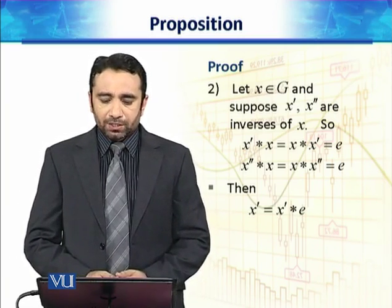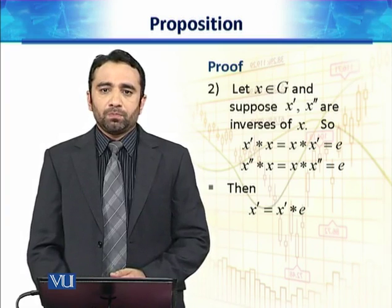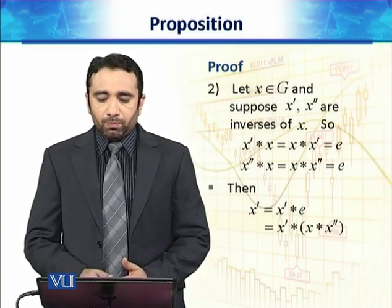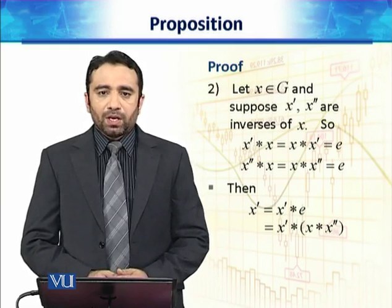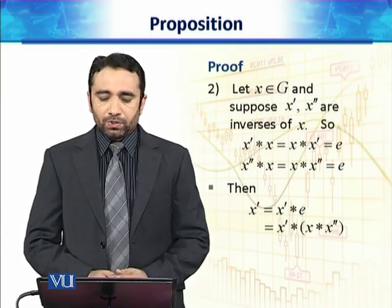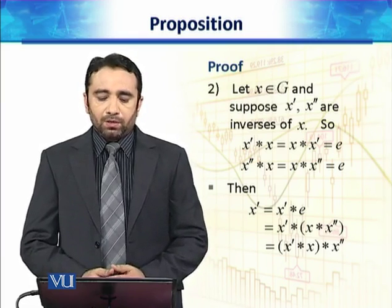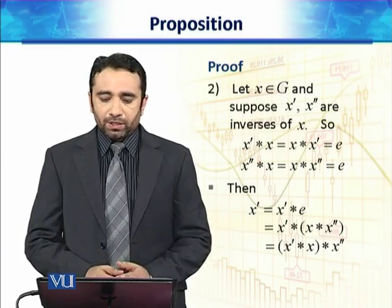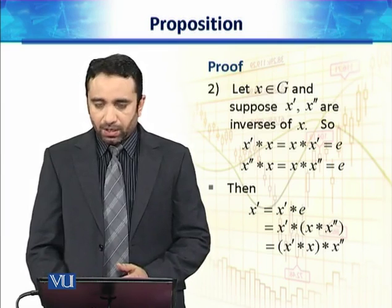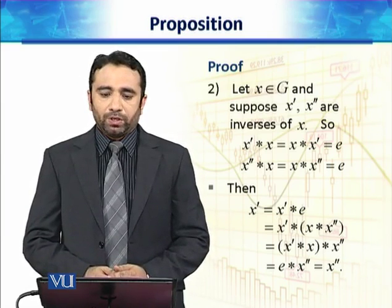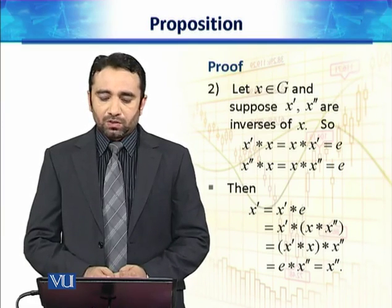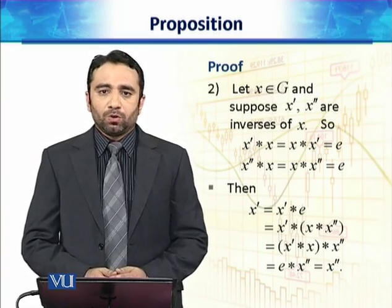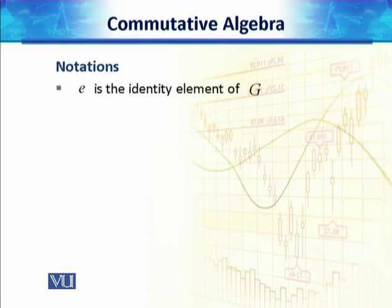And thus, if we start with X' can be written as X' star E identity because if we apply identity on X' it remains X', then we replace this identity E with X star X'' which is available from our supposition. Then we use the associative law. So we change the brackets. So X' star X star X''. Then this X' star X is equal to identity again by our supposition, then E star X'' is equal to X''. So it means X' is actually equal to X''.